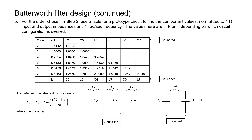The next step in our filter design procedure is to create a prototype circuit. A prototype circuit is a special circuit that assumes a one-ohm source impedance, a one-ohm load impedance, and a corner frequency of one radian per second. We're going to design a prototype circuit that works when all these values are one, and then scale it to the actual source and load impedances and operating frequency in our particular circuit.